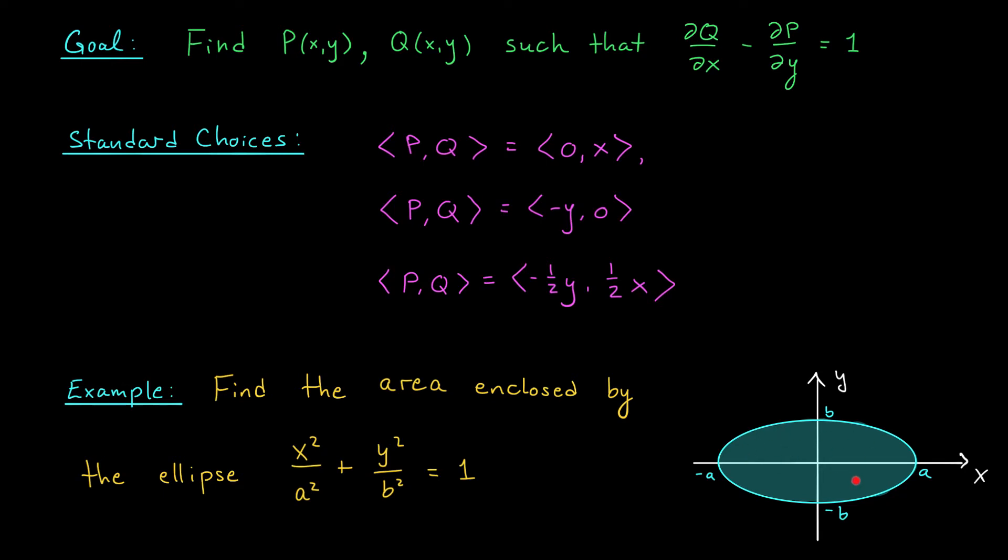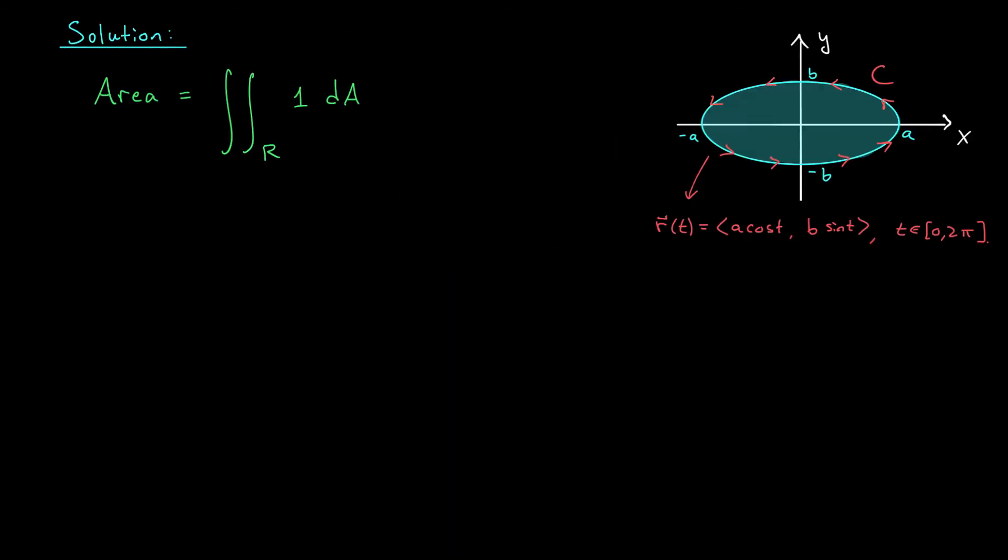Instead of working with the inside of the region, I'm going to focus on the boundary. The boundary is actually quite easy to parametrize. If you think about it, the parametrize of the unit circle is r(t) = ⟨cos t, sin t⟩, with t ranging from 0 to 2π. Well, I'm going to do something similar except now I have to stretch out my x coordinate by a factor of a and my y coordinate by a factor of b. So my parametrize is ⟨a cos t, b sin t⟩ with t ranging from 0 to 2π.